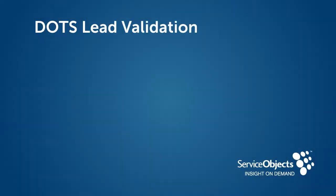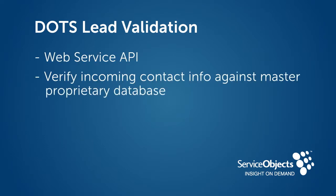Service Objects can instantly identify, verify, and qualify lead information at the point of entry. Our service, DOTS Lead Validation, is a crystal ball for leads. This web service API verifies incoming leads or incoming contact information against our master proprietary database in a fraction of a second.